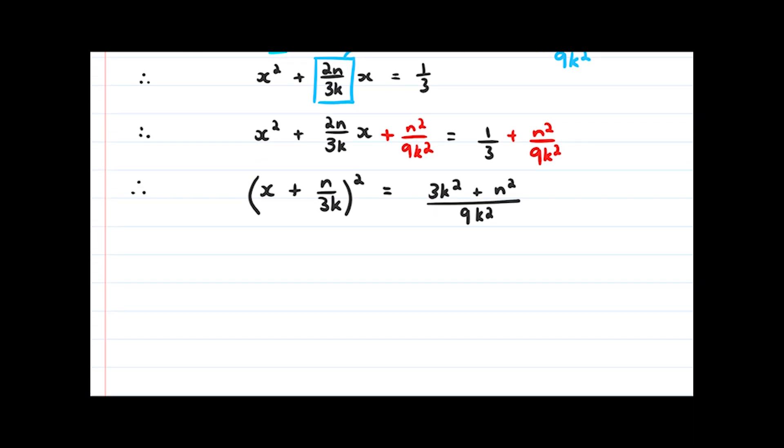Now all we need to do is simply get rid of the square on the left hand side. We do that by rooting both sides of our equation. Then we'll have x + n/3k = ±√(3k² + n²)/3k. Do you see from our rules of square roots that this 9k² when I take the square root of it, it becomes 3k, and that 3k is the same as the denominator that we're left with on the left hand side.